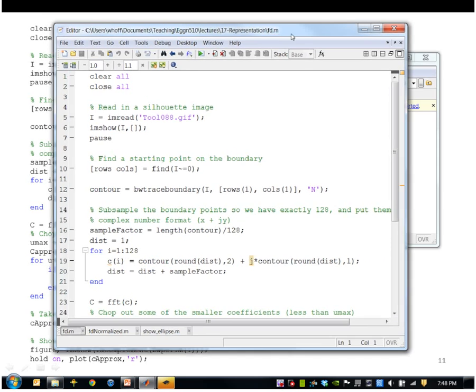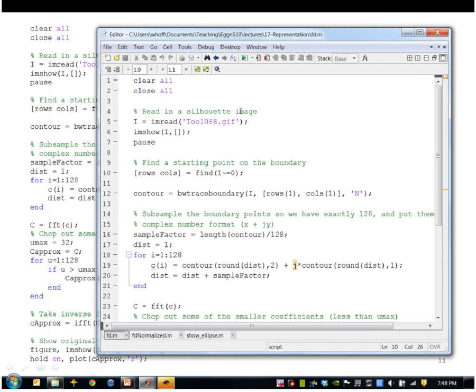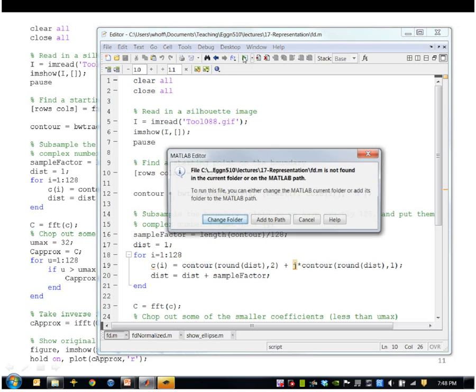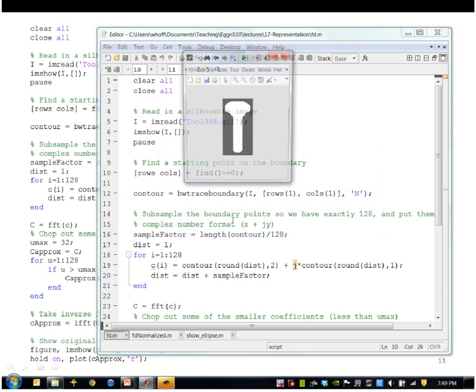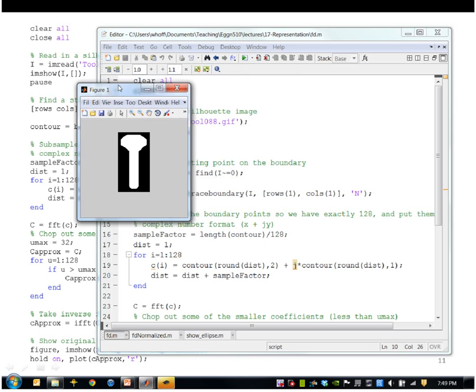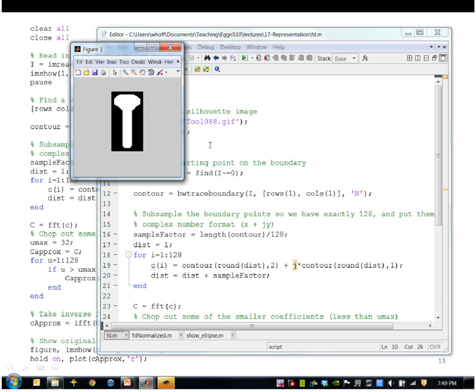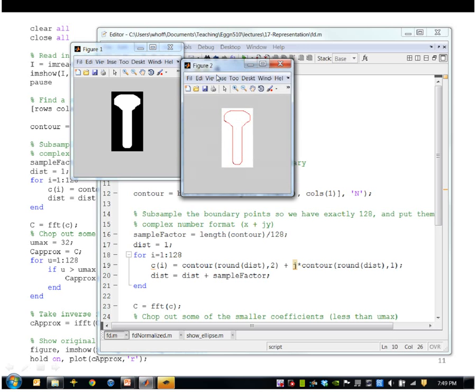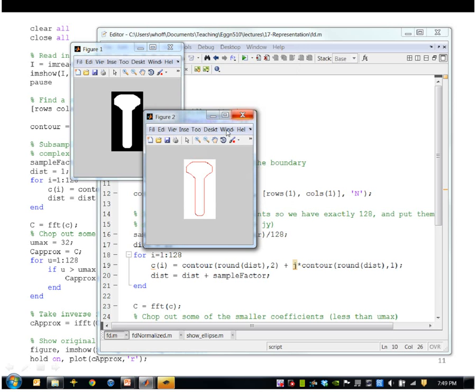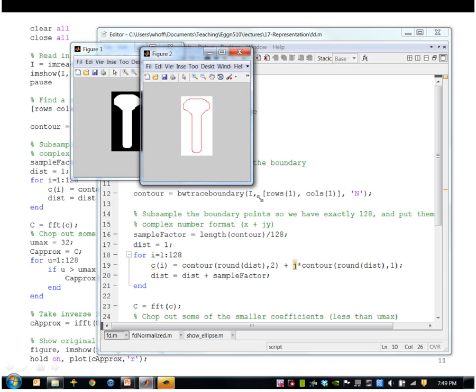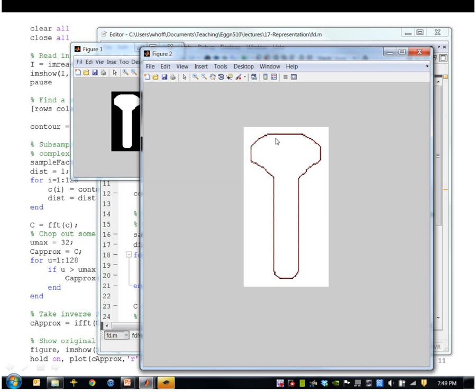Here is that program. I'm going to read in this image called tool88. Let me go ahead and run that. So here is that shape, and here is the reconstructed boundary. Let me expand this. It's overlaid on the actual boundary. The actual boundary is shown in black and the reconstructed boundary is shown in red. So a very good approximation to that.